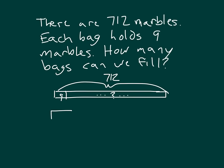We carefully set up our division problem of 712 divided by 9, so we can figure out how many bags that we can fill completely. 9 goes into 71 seven whole times, because 7 times 9 is 63. 71 minus 63 is 8. And so we have 82 there.